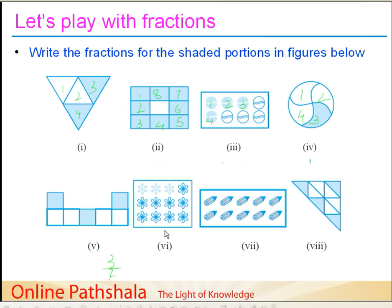In the sixth figure we have flower designs. How many do we have total? We have 3 multiplied by 4, so we have 12 total flowers. And how many are shaded? It's 1, 2, and 3. So the numerator is 3, the denominator is 12, and the fraction is represented as 3 by 12.